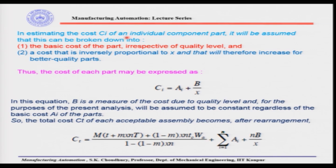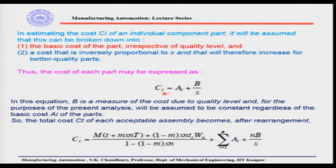In estimating the cost ci of individual component parts (c1, c2, c3 up to cn), it is assumed this can be broken down into two parts: the basic cost of the part (raw material cost irrespective of quality level), and a cost that is inversely proportional to x, which increases with better part quality. Thus, the cost of each part is expressed as: ci = ai + b/x, where ai is the fixed raw material cost and b/x means cost is inversely proportional to x. b is the measure of cost due to quality level and is assumed constant.